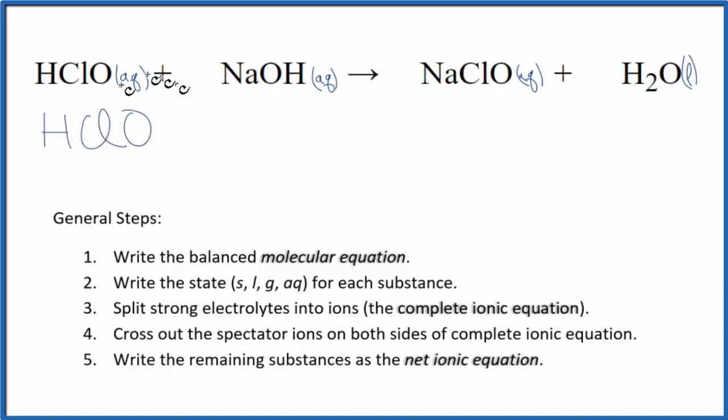I'll write aqueous at the end, so we have our HClO plus sodium, which is in group one on the periodic table with one plus charge. Hydroxide is always one minus. This is a strong base, so it's going to break apart into the sodium ion, Na plus, and the hydroxide ion, OH minus. These are the reactants in our net ionic equation.